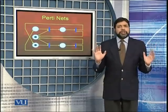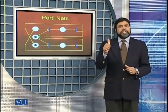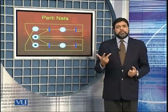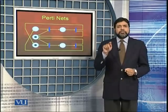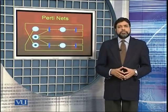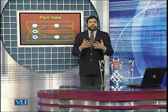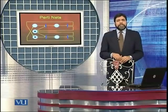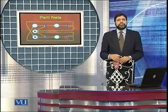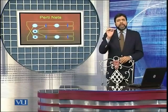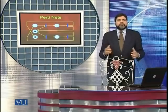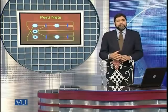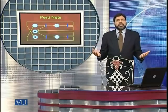So there are four or five things to remember. One: we have places, transitions, and arcs — these form the basic Petri Net graph. We can have directed edges from a place to a transition and from a transition to a place. The dynamic behavior of the system is specified with the help of tokens. We have some initial set of tokens present in some places — this is called the marking.